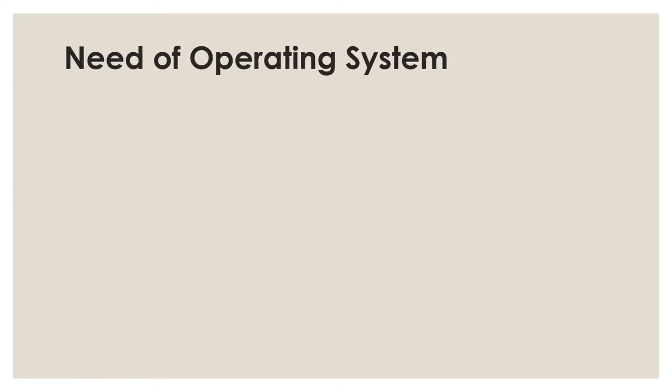The next topic is the need for an operating system. First, the OS is a platform for application programs — it provides a platform on top of which other programs, that is application programs, can run, helping users perform specific tasks easily. Next is booting, which is basically the process of starting the computer. When the CPU is first switched on, it has nothing inside the memory, so we load the operating system into the main memory.